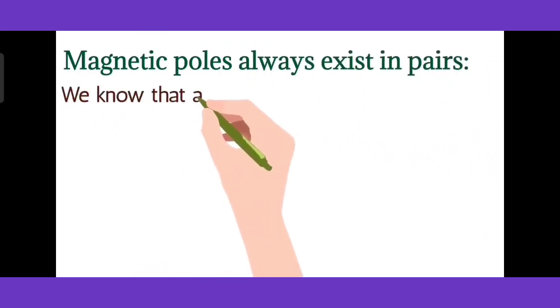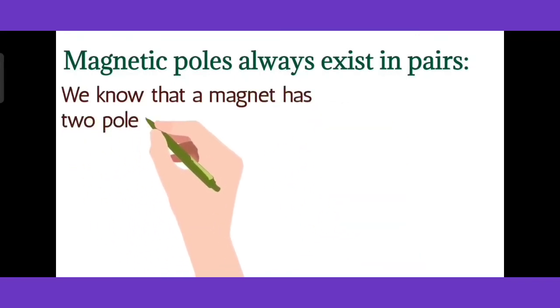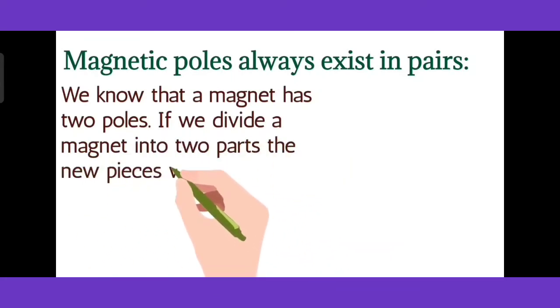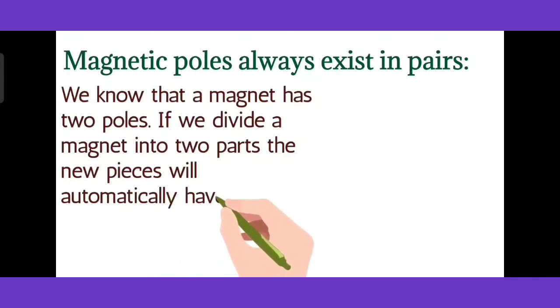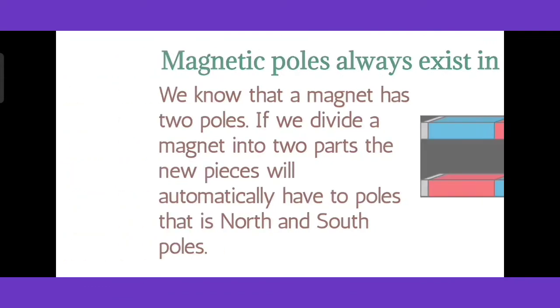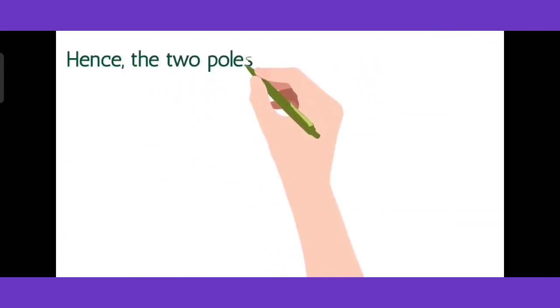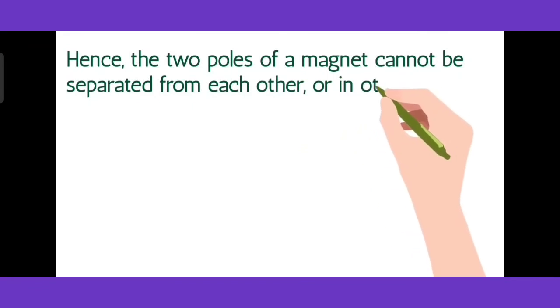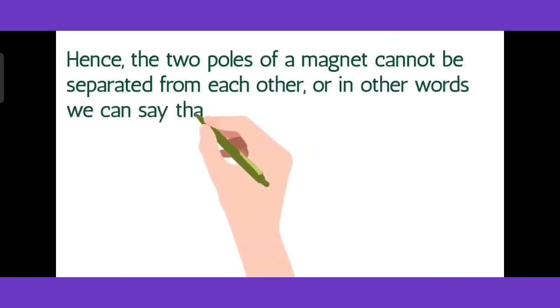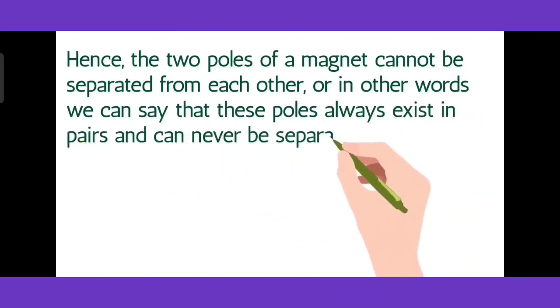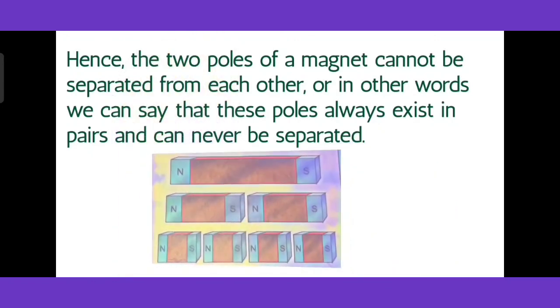Next is Magnetic Poles always exist in Pairs. We know that a magnet has two poles. If we divide a magnet into two parts, the new pieces will automatically have two poles, that is North and South poles. Hence, the two poles of a magnet cannot be separated from each other, or in other words we can say that these poles always exist in pairs and can never be separated.